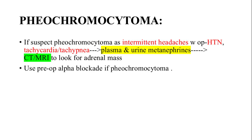Pheochromocytoma is suspected with symptoms like headaches and hypertension. Diagnosis involves measuring plasma and urine metanephrines, followed by imaging. Preoperative alpha blockade is essential for managing this condition.